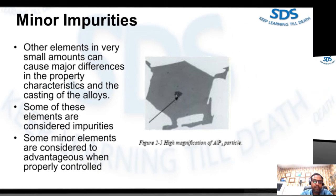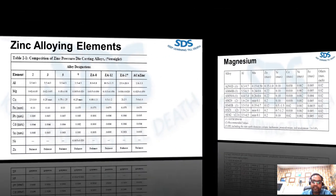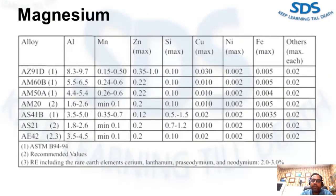Manganese increases strength and ductility of aluminum alloys in small additions by combining with iron to change the microstructural constituent from a needle-like plate to one resembling Chinese script. It must be controlled, however, because together with chromium it is a main catalyst in the formation of sludge in combination with iron in aluminum die casting alloys. Manganese imparts some minor improvements in strength and corrosion resistance in aluminum and magnesium die casting alloys.